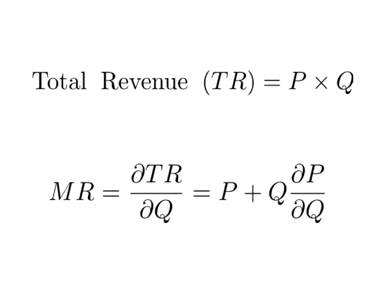Total revenue is simply equal to price times quantity. Marginal revenue is the change in total revenue with regards to a change in quantity, or the derivative of total revenue with regards to quantity.